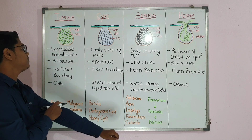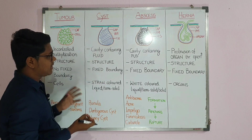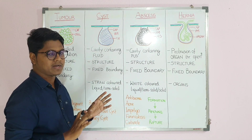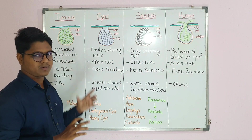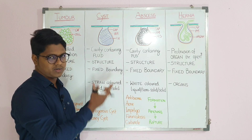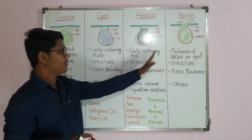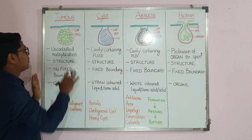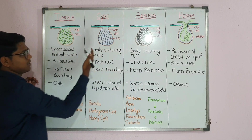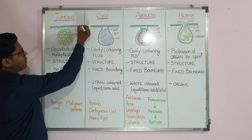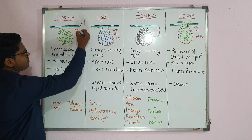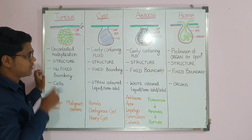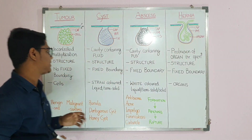First, let me explain the diagrams. All the cases are taken from the abdomen as a reference example, so that you can understand — the principle is the same. The purple line is the peritoneum, the green line is muscle, and the orange line is skin. Between the muscle and skin there is subcutaneous tissue. All the diagrams represent the same layout.